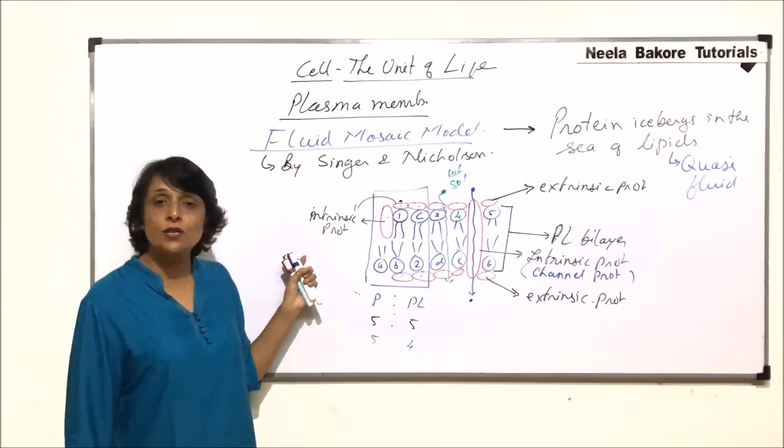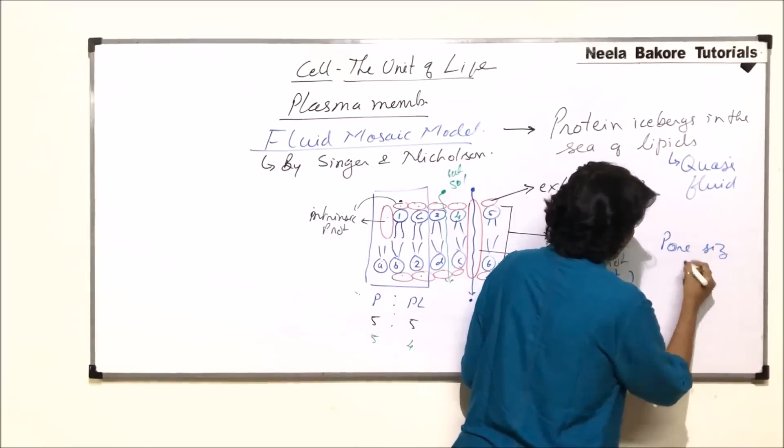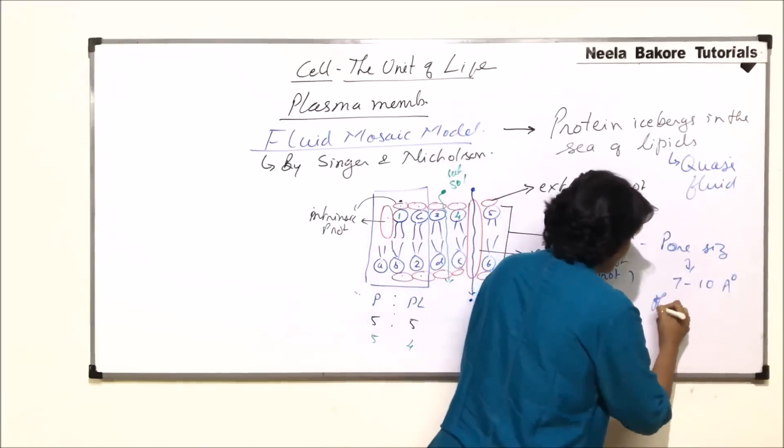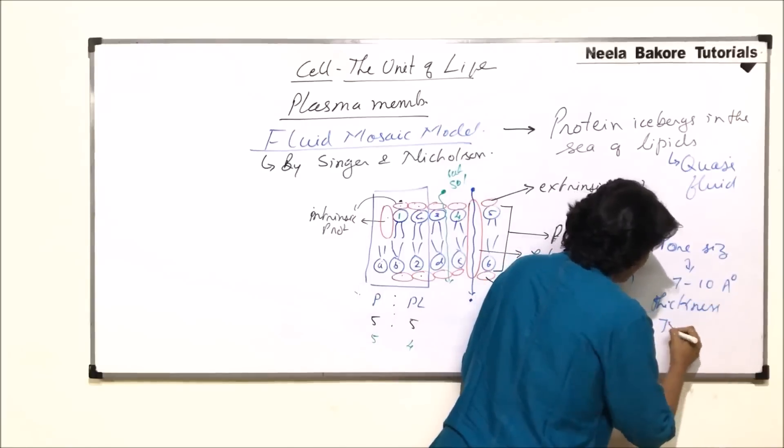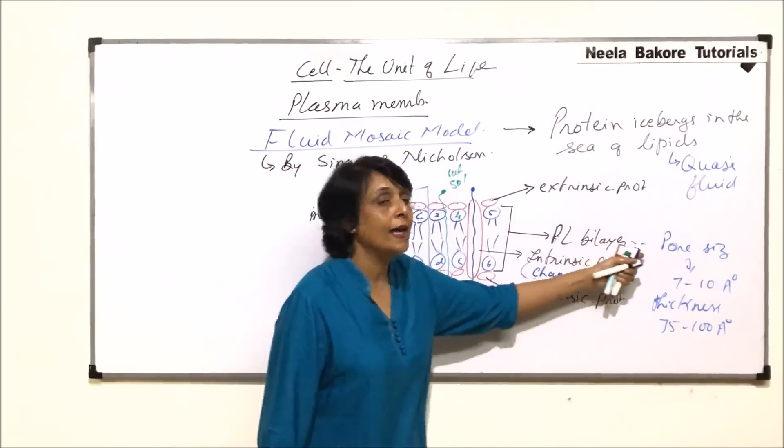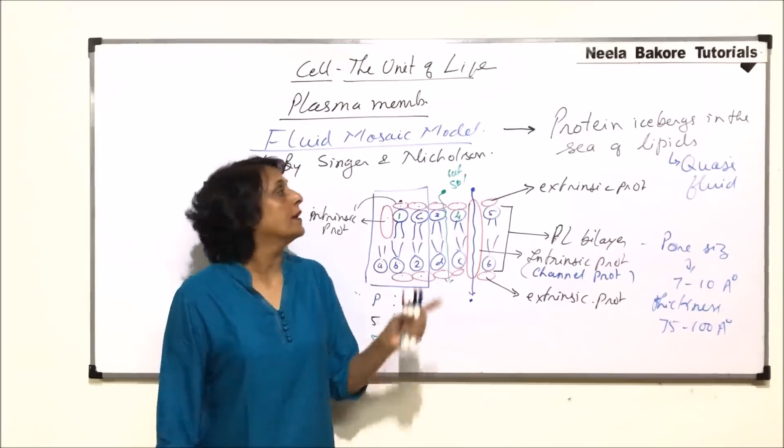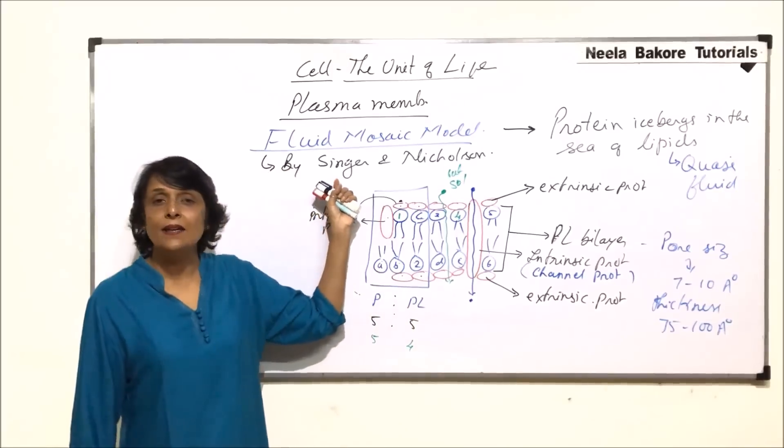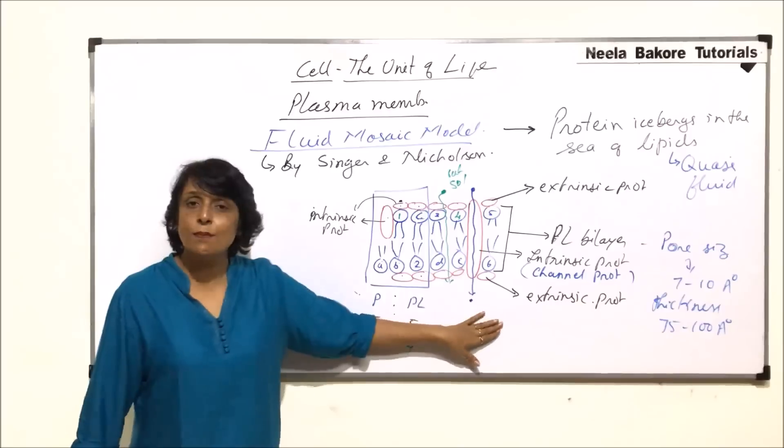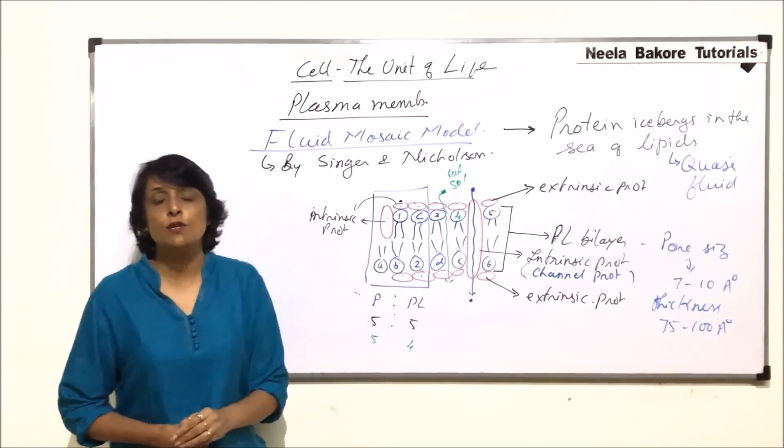That is the pore size of plasma membrane. Plasma membrane is porous and the pore size is 7 to 10 angstroms, and the thickness is 75 to 100 angstroms. Thickness was given by Robertson and pore size was given by Danielli and Davson. So all information together is used by Singer and Nicholson, and they called their model as protein icebergs in the sea of lipid. And as it is able to explain all the properties, this model is an accepted model. And till date, we are using the same model.